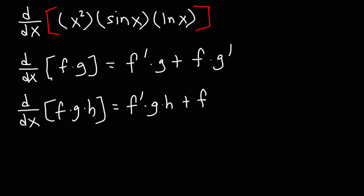Next, we're going to take the derivative of the second part, g, leaving the other two functions the same. So it's f times g prime times h. For the last part, we differentiate the last function h, leaving the first two the same. So it's f times g times h prime.